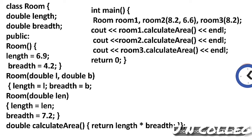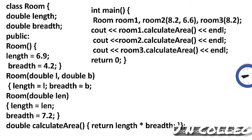In Constructor Overloading, we use multiple Constructors and on the basis of the parameters passed at the time of creating the object, the compiler decides which Constructor will be executed. I hope you have got a basic idea. If you have any doubt, please write to me in the comment box so I can clear your doubt.